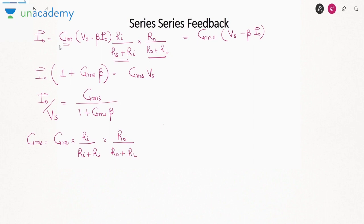The next term to find is input resistance. What do we expect? It is series-series feedback, meaning at both the input and output terminals we have series connection. In series connection, resistance increases. So our expectation is that both the input and output resistance should increase.